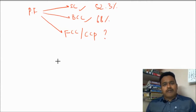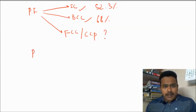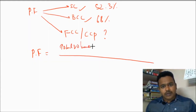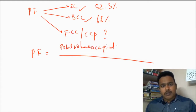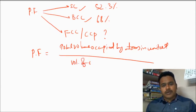Now we are going to find out the packing fraction of FCC. The packing fraction formula is: total volume occupied by atoms in the unit cell, divided by volume of the unit cell.